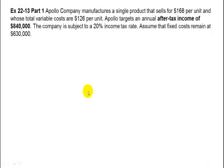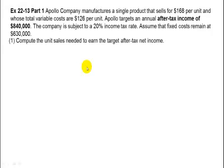Apollo Company manufactures a single product that sells for $168, and the total variable cost per unit is $126. Apollo targets an annual after-tax income of $840,000. The company is subject to a 20% income tax rate. Assume that fixed costs remain at $630,000. Part 1: compute the unit sales needed to earn the target after-tax net income.